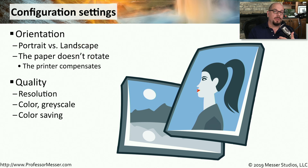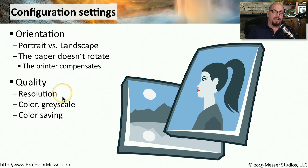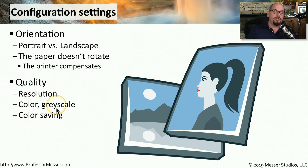Many printers will also allow you to change the quality settings of the output. For example, you may be asked to change the resolution of your output — if this is a graphical output, then the higher resolution will look much better than a lower resolution. You might also be able to decide whether you'll print in color or in grayscale. You might also have the option to print in a color-saving mode so that you're using less toner or less ink than a normal printout.